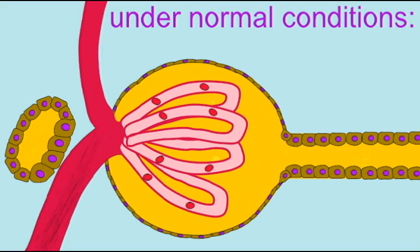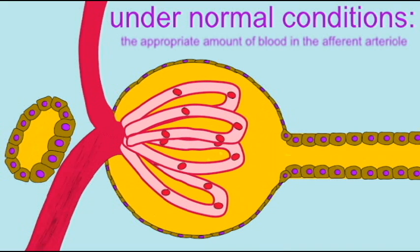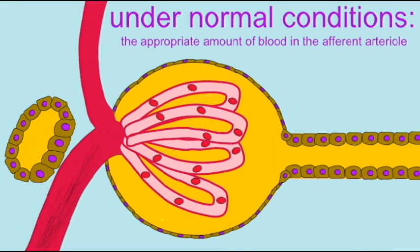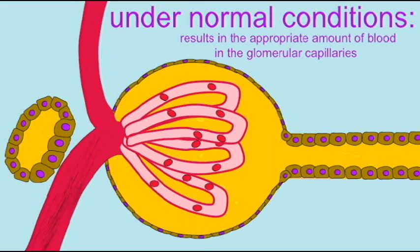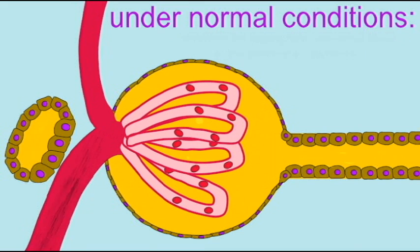Under normal conditions, an appropriate amount of blood passing through the afferent arteriole causes appropriate blood pressure in the glomerular capillaries, which results in the appropriate amount of filtrate being formed. It is not adaptive to have a filtration rate which is too high.